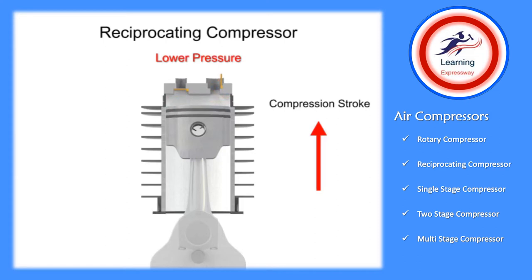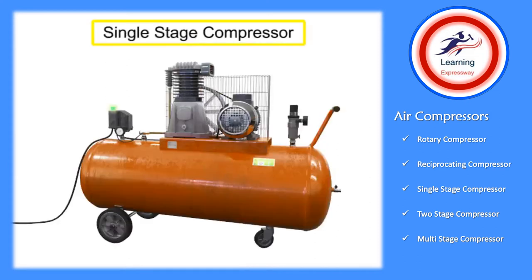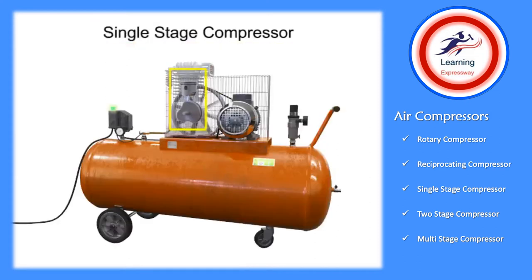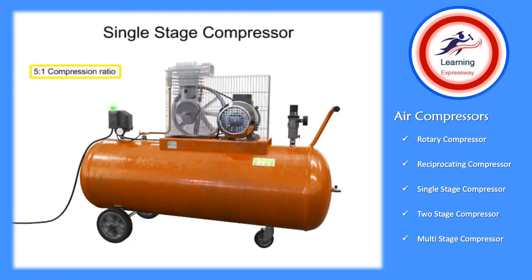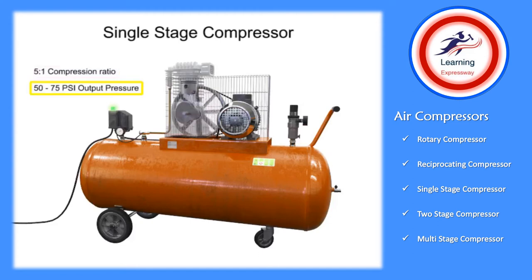This is a single-stage compressor. It has only one piston and cylinder and compresses the air in only one stage. A single-stage compressor typically has a compression ratio of 5 to 1 with an output pressure of about 50 to 75 psi.